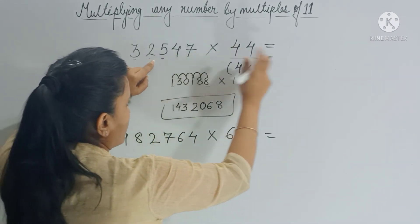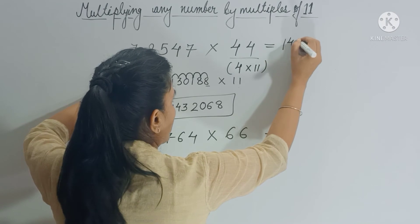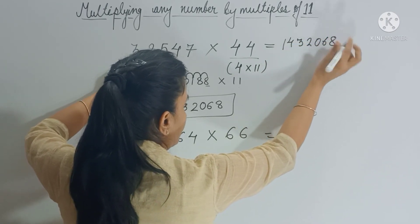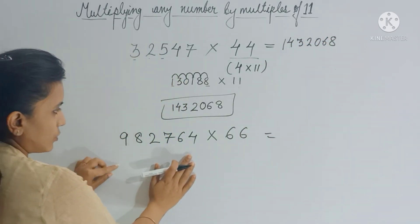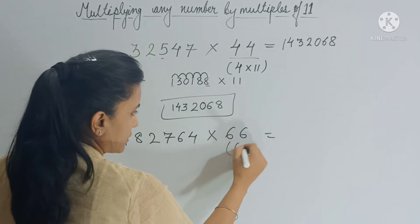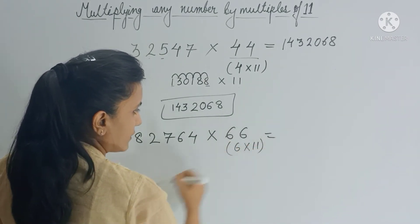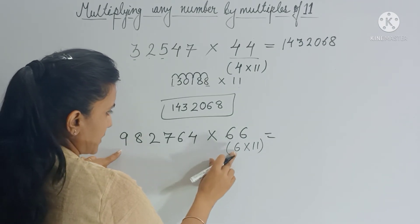So when you multiply these two numbers, you will get 1432068. Let's see this question also. So here 66 I can write as 6 multiply 11. Now multiply this from 6.